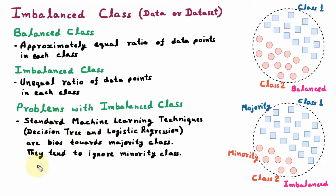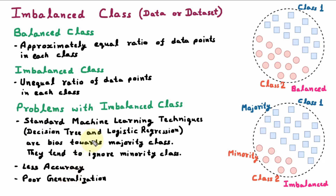The next problem is less accuracy. Machine learning algorithms work well if the classes are balanced. But if the classes are imbalanced, they focus more on the majority and try to ignore the minority, and because of that, accuracy is not achieved, so they are less accurate. The next problem is poor generalization. The machine learning algorithms are more focused towards the majority class and not considering the minority class, so the conclusions they give are not proper and they are not generalizing properly. These are the problems with imbalanced class data or dataset.